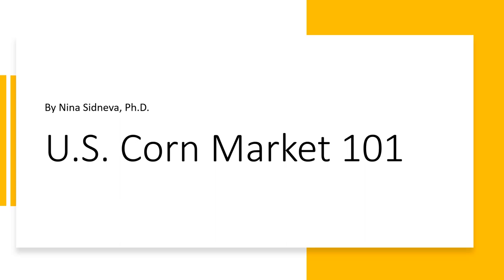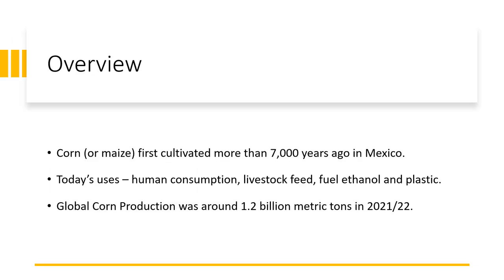Hello. Today we will focus on the basics of the U.S. corn market. We will discuss its primary demand and supply drivers. We begin with an overview of the world and U.S. corn markets. Corn, also called maize in many languages, was first cultivated more than 7,000 years ago in Mexico before spreading throughout North and South America. Today corn has multiple uses: human consumption, livestock feed, converted into fuel ethanol, and made into plastic.